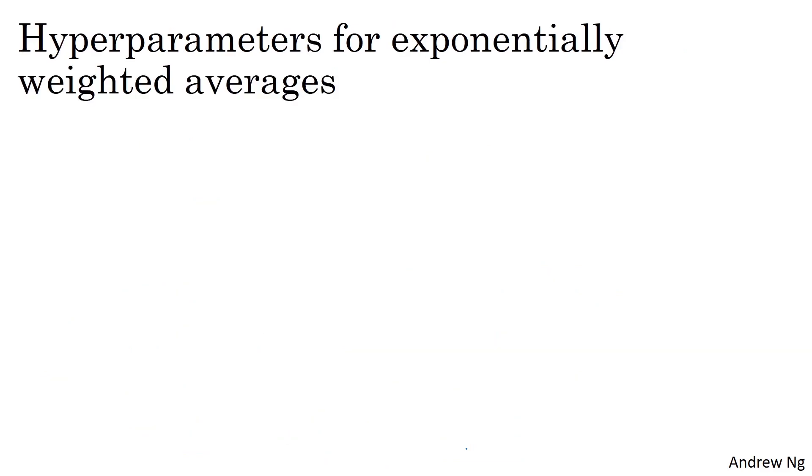Finally, one other tricky case is sampling the hyperparameter beta used for computing exponentially weighted averages. So let's say you suspect that beta should be somewhere between 0.9 to 0.999. Maybe this is the range of values you want to search over. So remember that when computing exponentially weighted averages, using 0.9 is like averaging over the last 10 values, kind of like taking the average of 10 days temperature. Whereas using 0.999 is like averaging over the last 1000 values.